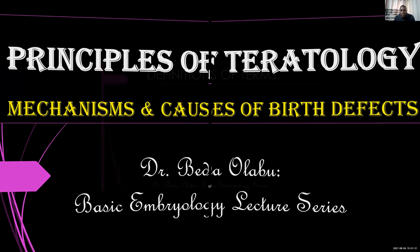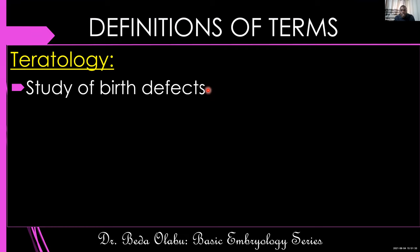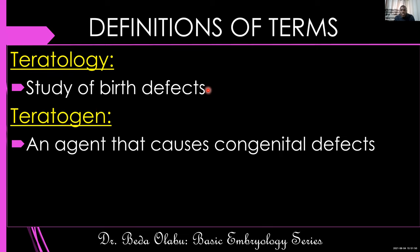Let's define a few terminologies. The first terminology is teratology — teratology is the study of birth defects. I also want to define the term teratogen. A teratogen is an agent that causes a congenital defect. This agent can be a chemical like a drug, it can be an infective organism, or it can be physical factors like radiation. So all those are teratogens — an agent that causes a congenital defect.